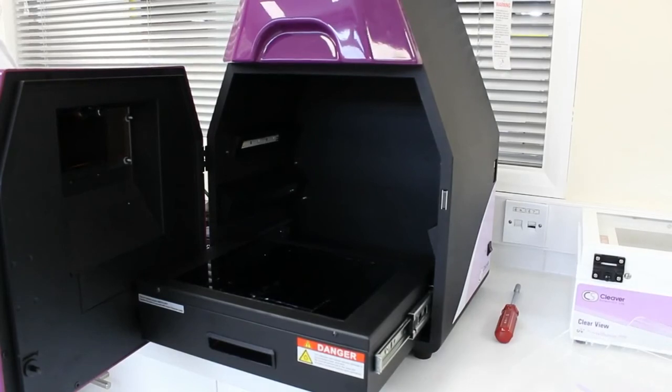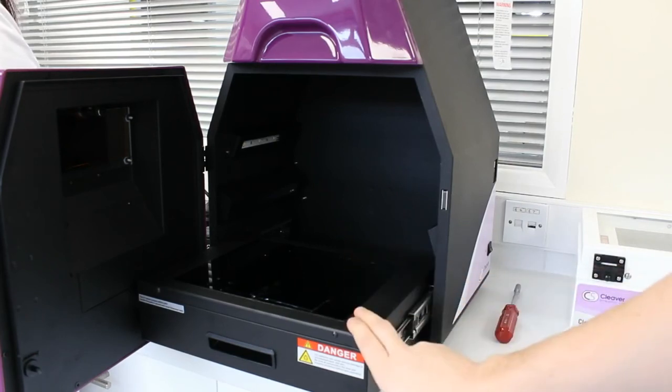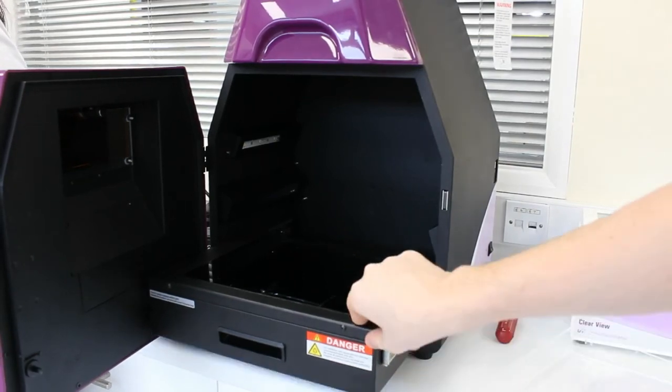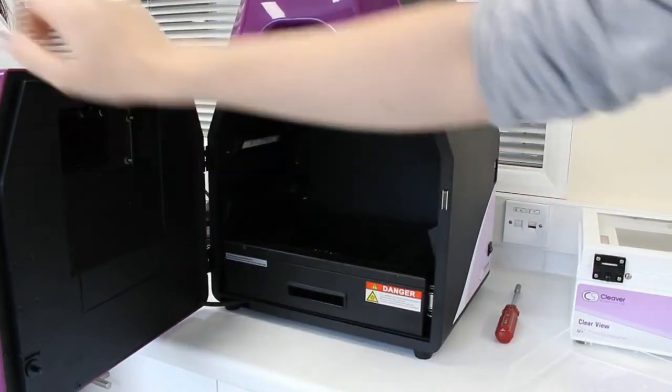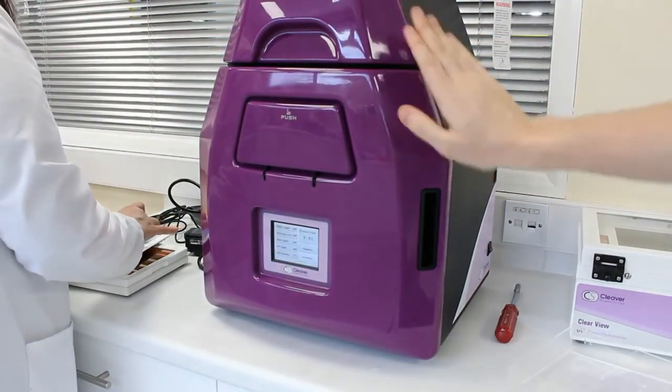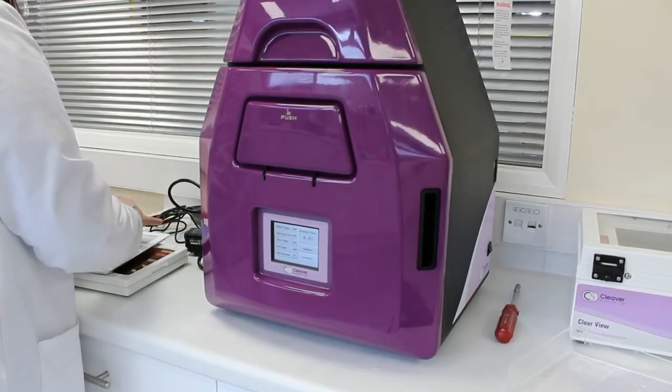Okay, so we've moved our gel from our staining tray using our gel scoop and put it on the transilluminator of our gel dock system. We're going to put this in here, close this up and connect to the gel dock and image the gel.